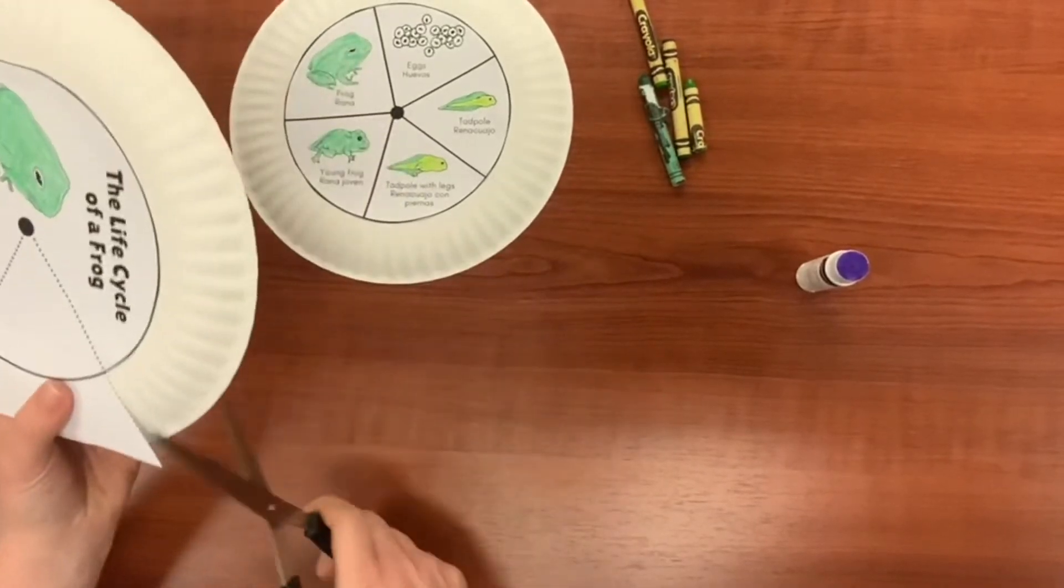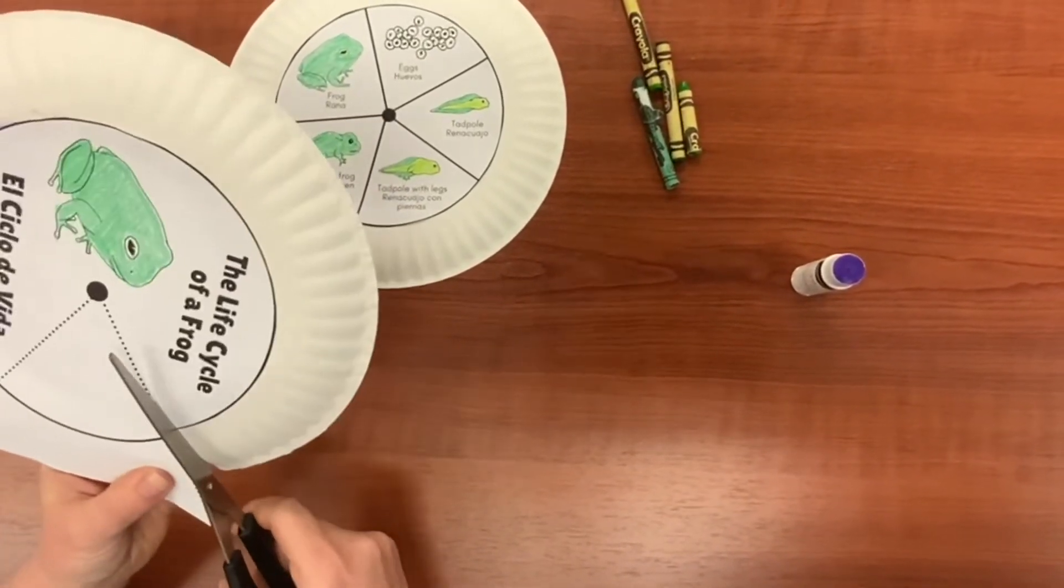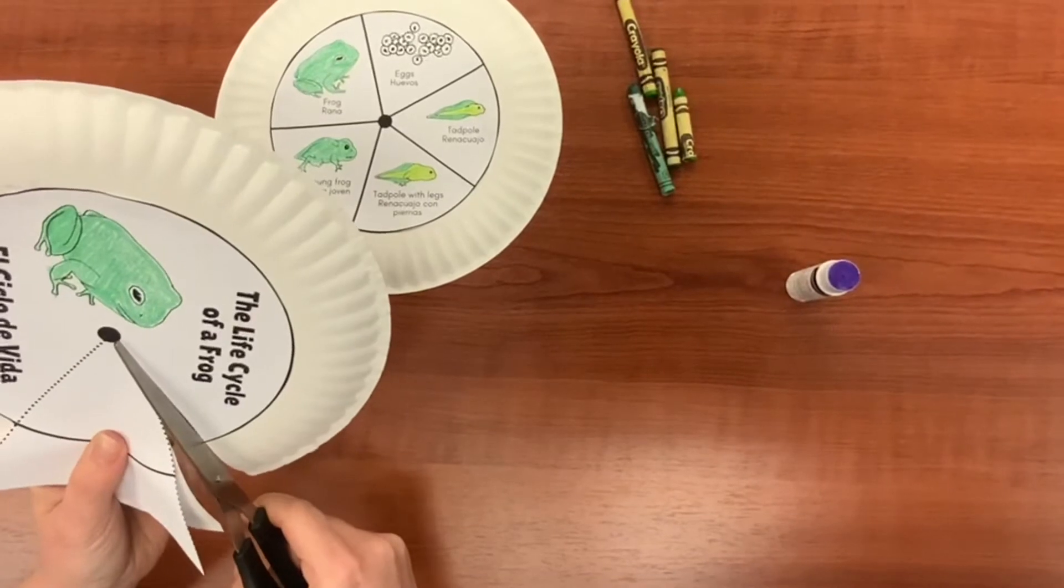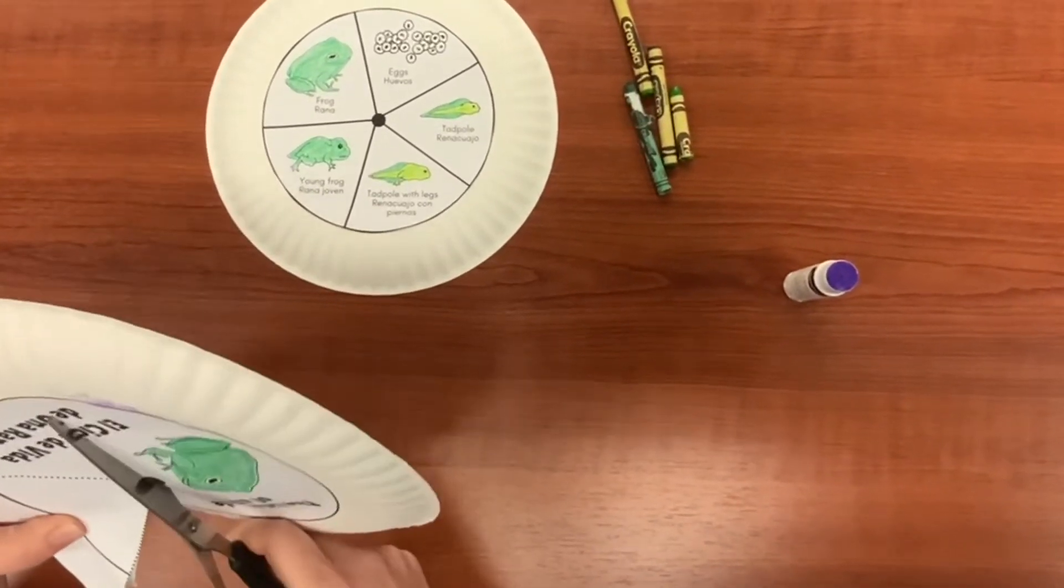The next step is to cut out the dotted line triangle from the edges to the center of the plate. Just like a pie slice.